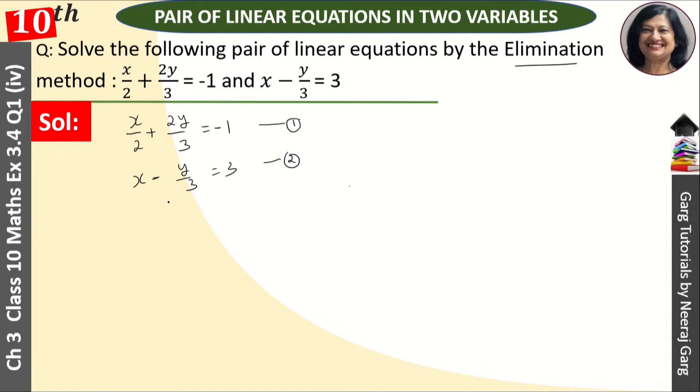Now let's simplify these equations. First, let's do the second one. Let's take LCM. Here it's 3. So 3x minus y is equal to 3. Then 3x minus y is equal to 9. This is our third equation.